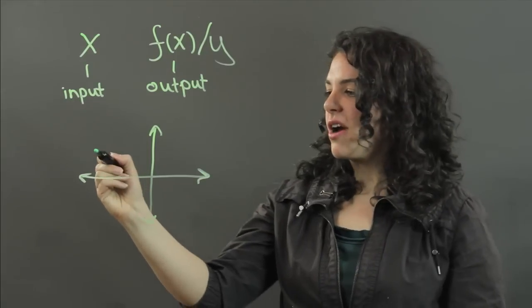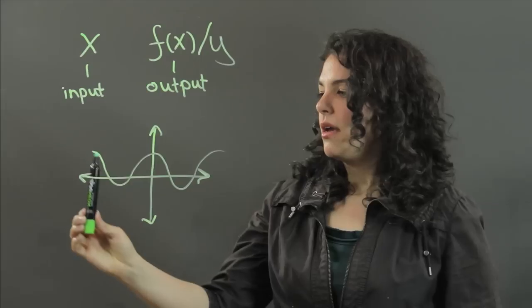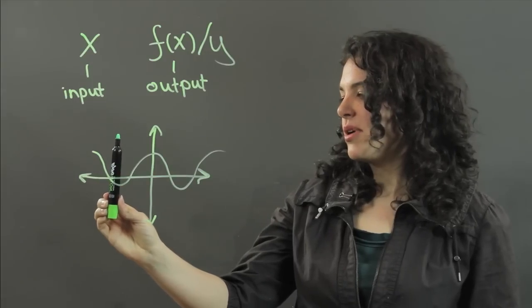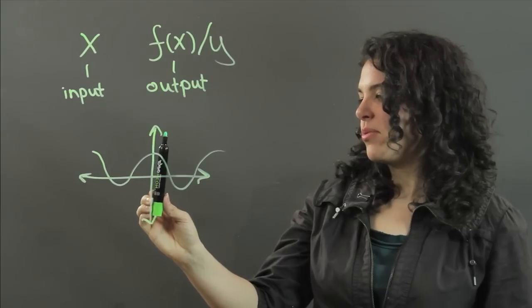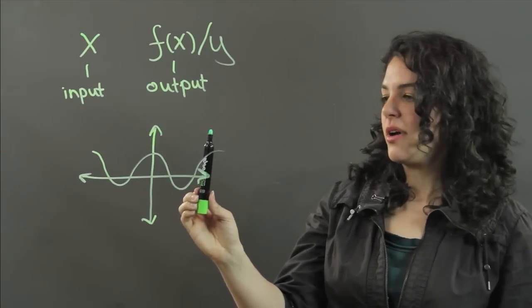So if I have a graph like this, and I pass a vertical line across it, at every point it passes through, there's just one point, right? It's only crossing at one f of x or y value at a time.